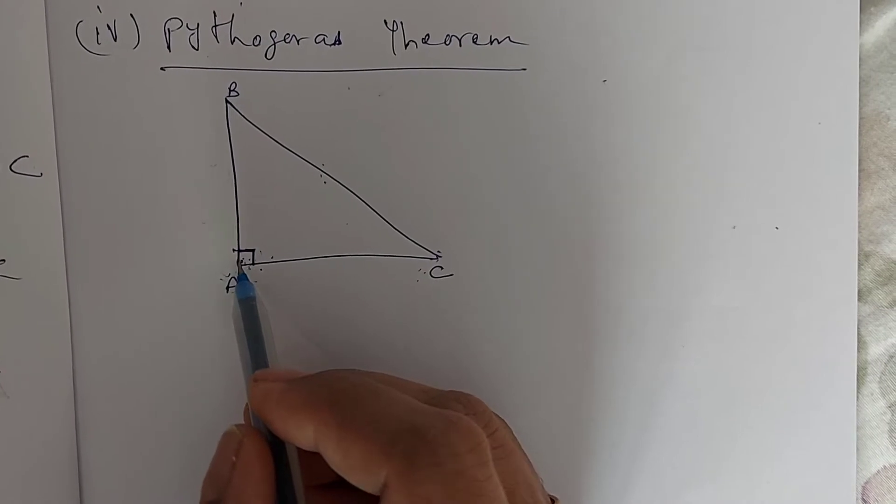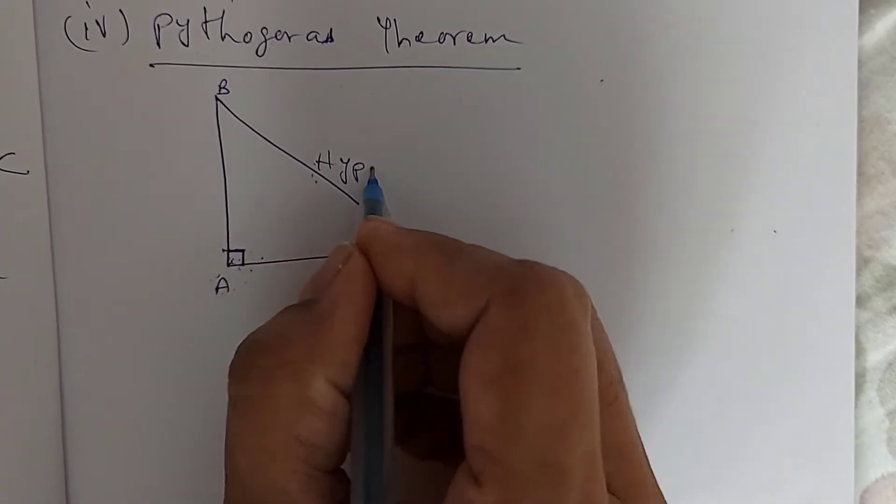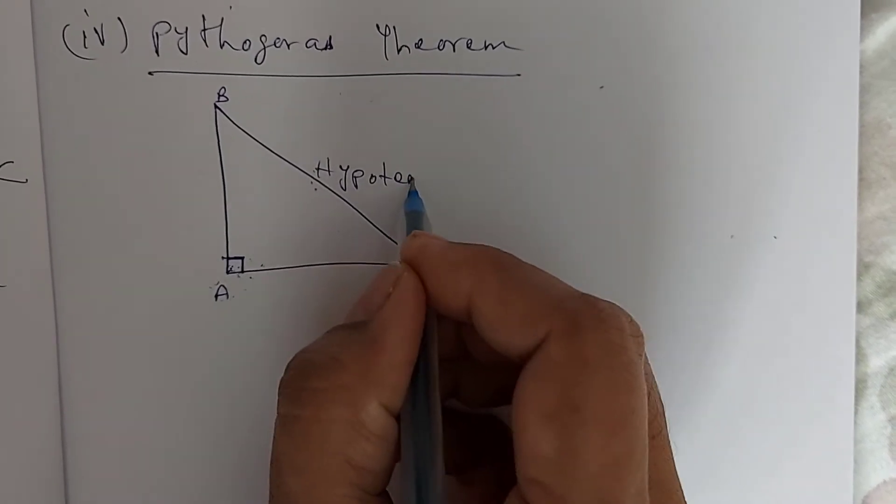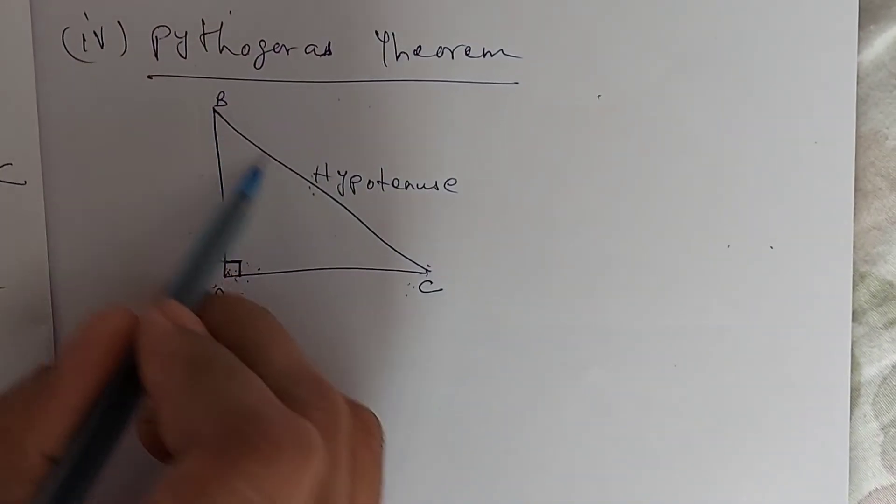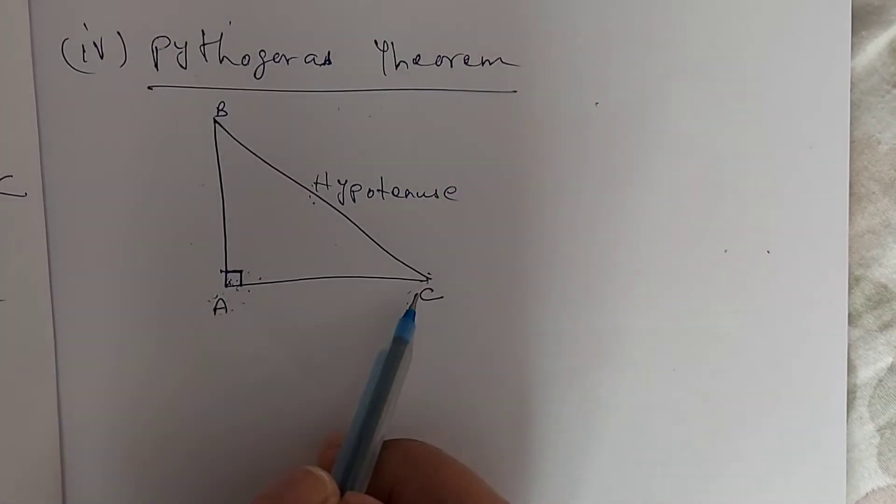The side opposite to that right-angle is called the hypotenuse. Hypotenuse. This is nothing but the longer, lengthier side of the right-angled triangle.